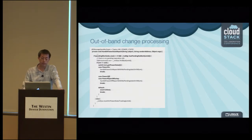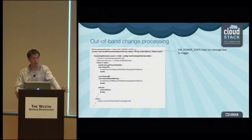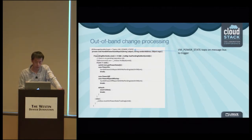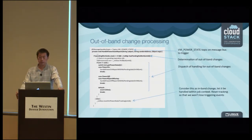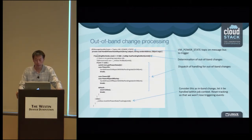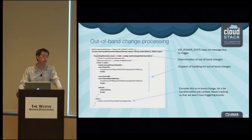For out-of-band changes, we provide an annotation-based facility so you can easily mark up the events you are listening on in the event bus through annotations. The logic becomes very clean — you first make a determination of whether it is an out-of-band change, and if it is, dispatch the handling with a simple switch. If it's not an out-of-band change, leave things to the orchestration jobs.